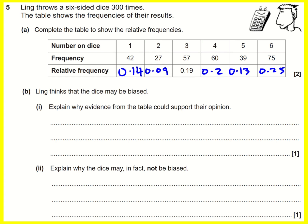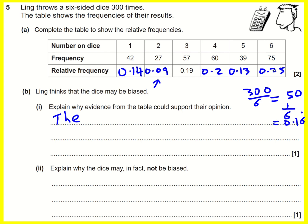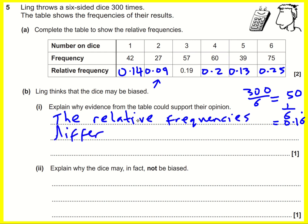Ling thinks the dice may be biased — what evidence supports this? The relative frequencies vary quite a lot. If it were unbiased, we'd expect them all to be about the same: 300 divided by 6 is 50, so each relative frequency should be about 1/6, which is 0.16 recurring. But some are quite a bit less and some are quite a lot more, so the relative frequencies differ considerably.